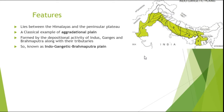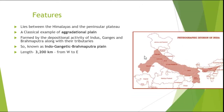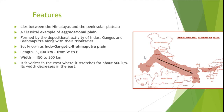It is otherwise known as the Indo-Gangetic Brahmaputra Plain. Its total length is about 3,200 km from the mouth of the Indus to the mouth of the Ganges. The Indian sector alone accounts for 2,400 km in length. Its average width varies from 150 to 300 km, and it is widest in the west where it stretches for about 500 km. Its width decreases towards the east. Its area is 7.8 lakh square km.